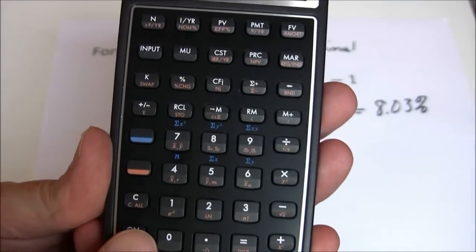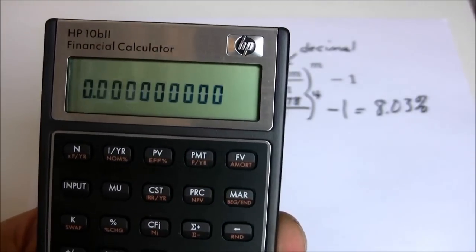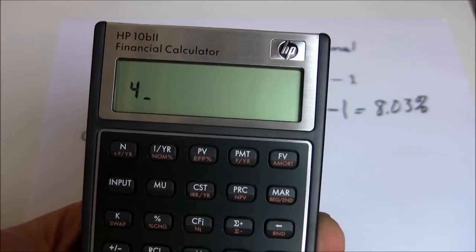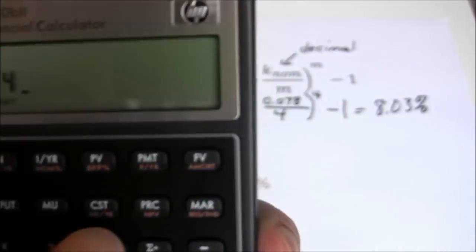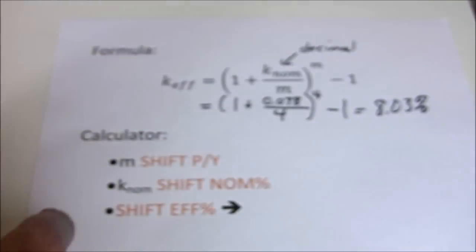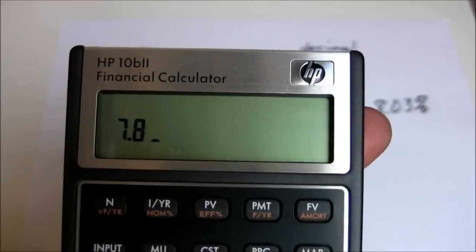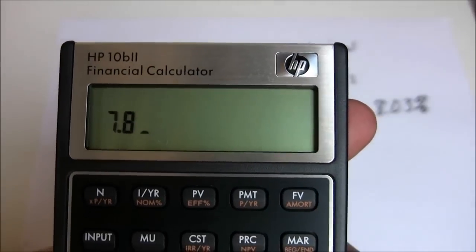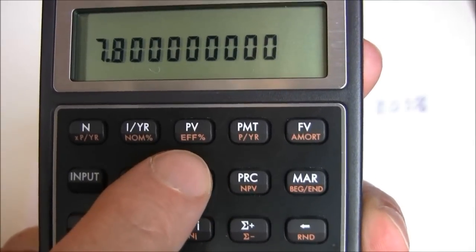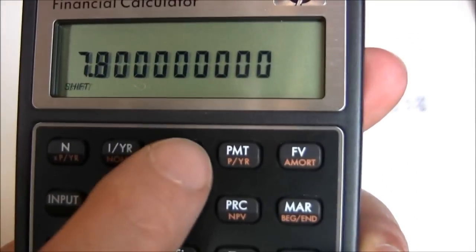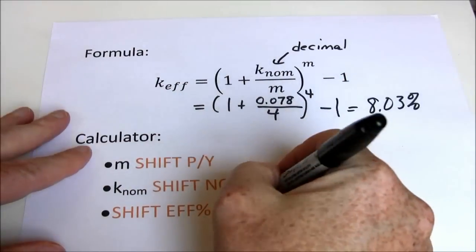Let's walk through that example. Get your financial calculator. First, do shift, clear all to check your current periods per year — right now it's 1, and I need it to be 4 for quarterly. Enter 4, then shift, periods per year. Now I'm set for quarterly. Next, put in the nominal rate — that's a shift button — enter 7.8 (not a decimal this time), then shift, nominal percentage. Finally, for the effective percentage, press shift, effective percentage. The answer is 8.03.